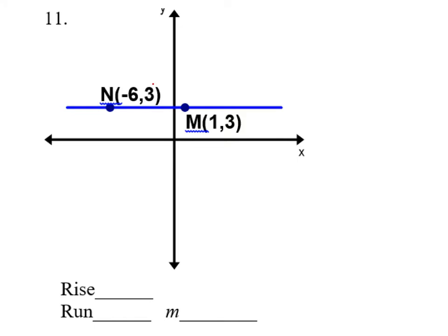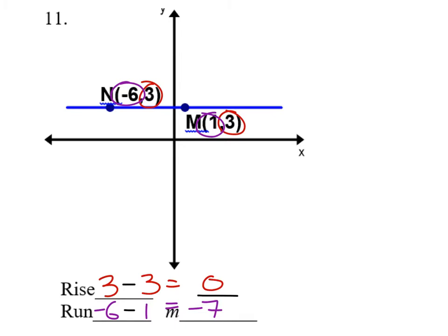For number eleven, the rise uses the y values — three and three. Subtracting three minus three gives us zero. The run uses the x values negative six and one, which we subtract to get negative seven. The slope is zero divided by negative seven — how many negative sevens go into zero? That's zero. So the slope is zero, which means it has no steepness. It's a horizontal line — the easiest one to walk because it has no steepness.